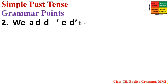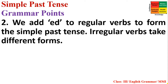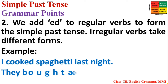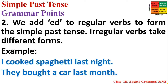Number two: we add -ed to regular verbs to form the Simple Past Tense. Irregular verbs take different forms. Example of regular verb: 'I cooked spaghetti last night.' 'Cooked' comes from 'cook' — we add -ed to make it past. Example of irregular verb: 'They bought a car last month.' 'Bought' is the past form of 'buy' (B-U-Y). This is called an irregular verb.